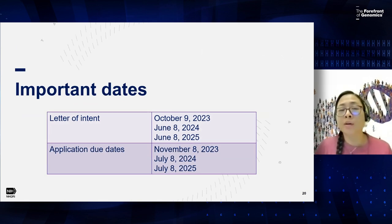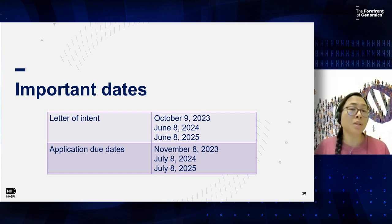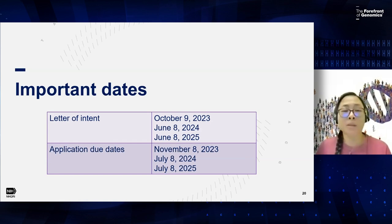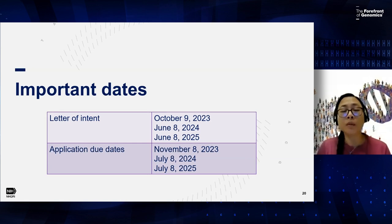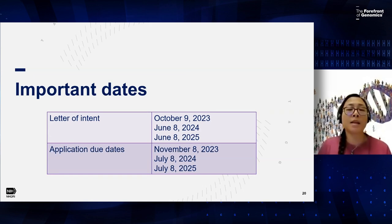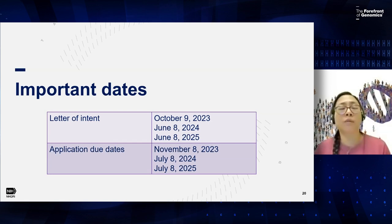The important dates: if you're planning on submitting an application, we would appreciate a letter of intent by October 9th. It's not required and it's not binding. If you don't send a letter of intent by October 9th, you still are allowed to submit an application, but we do encourage them because it helps us plan for our review workload. The deadline for this cycle is November 8th, 2023. We will have successive deadlines in July of 2024 and then July of 2025 as well.